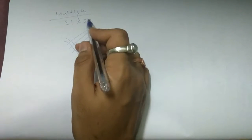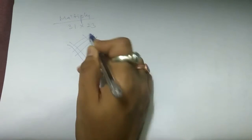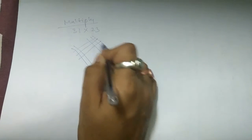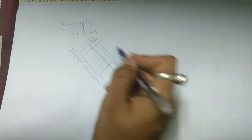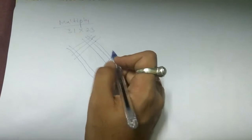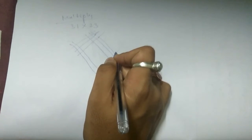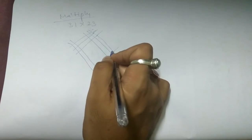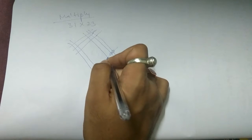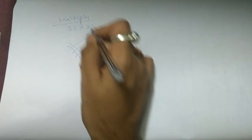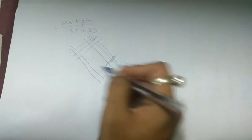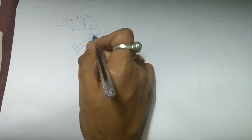And for 3, draw this line. Each line should cut one another. Now look at the points of intersection here: 1, 2, 3. So 3 here.